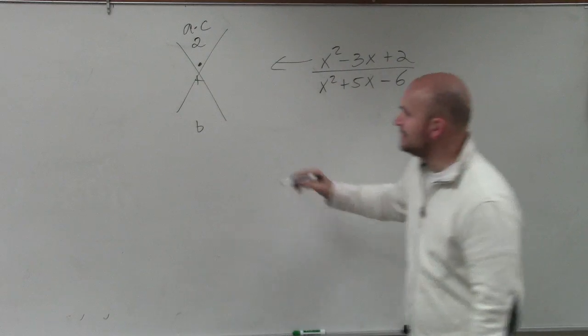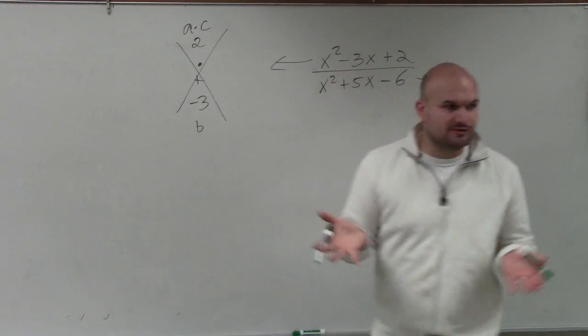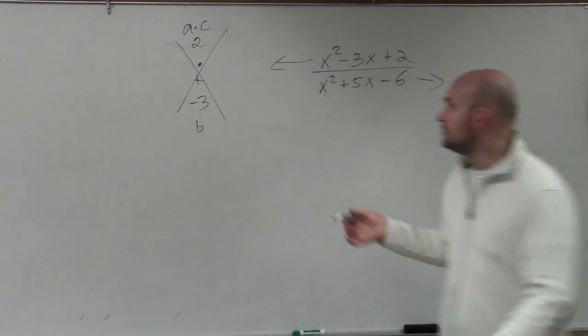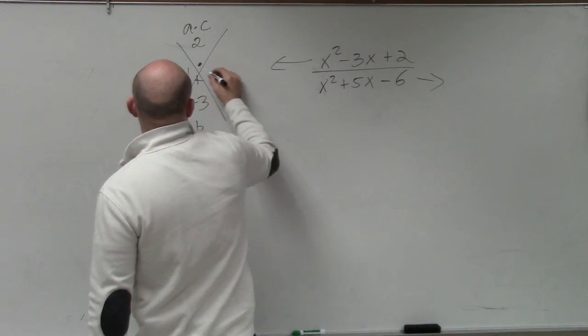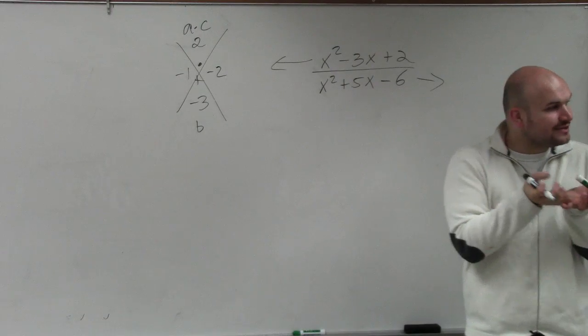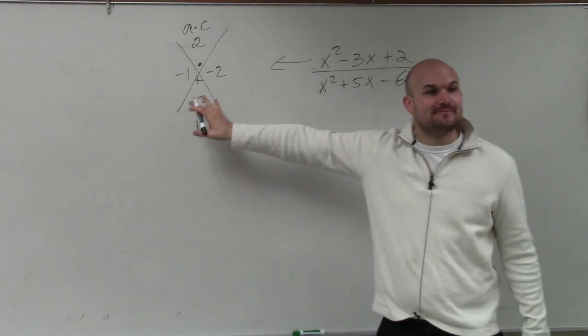And then our middle term is negative 3. So we think about what two numbers multiply to give you 2, add to give you negative 3. Well, those factors are obviously negative 1 and negative 2. Now, since a is equal to 1, I can write these as my factors.